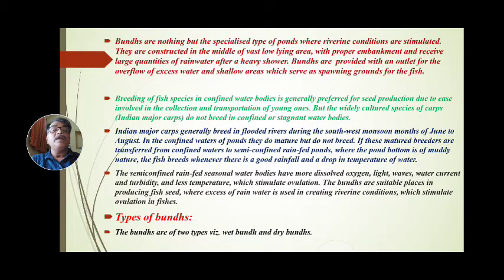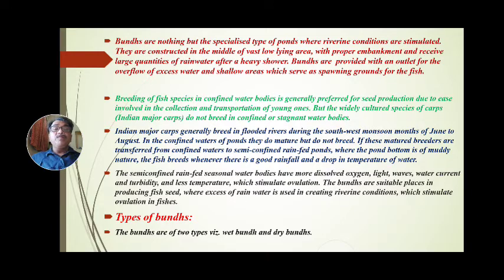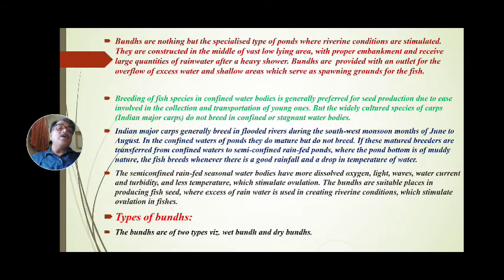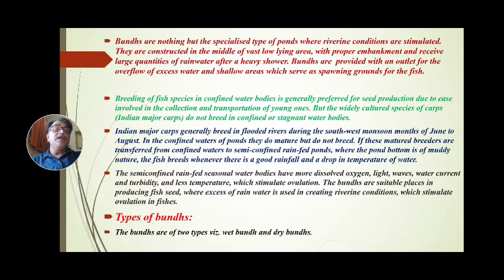Bunds are provided with an outlet for the overflow of excess water, and shallow water areas which serve as a spawning ground for the fish. When bunds are completely filled with water, excess water overflows and is released outside through the outlet. In the shallow spawning ground areas, fish breed and spawn. This area is called the bund, and breeding here is called bund breeding.